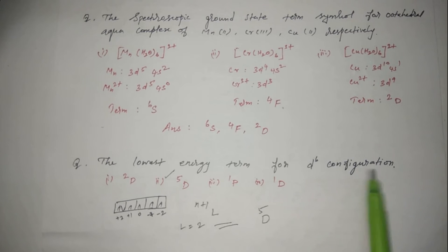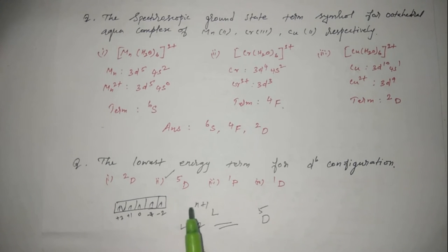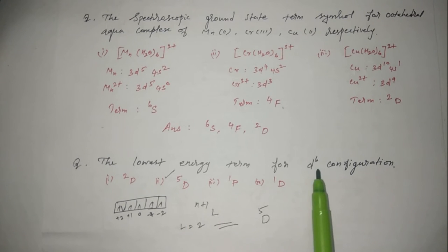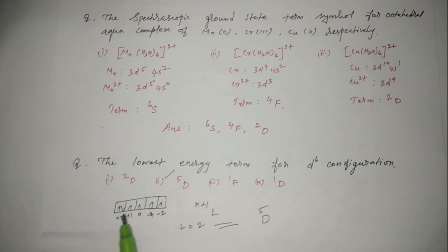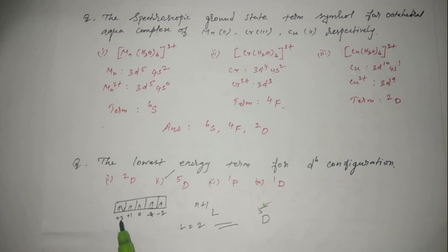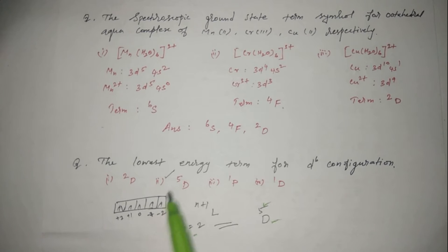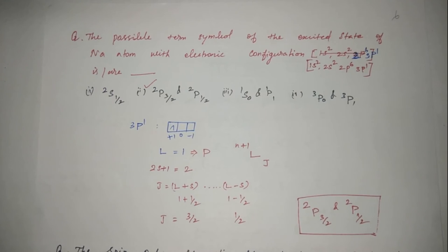For d⁶ configuration: placing electrons using Hund's rule gives 4 unpaired electrons. Applying n+1: 4+1=5, so spin multiplicity is 5. L is equal to 2, so the term letter is D. Therefore the lowest energy term for d⁶ configuration is ⁵D. This is the correct answer.